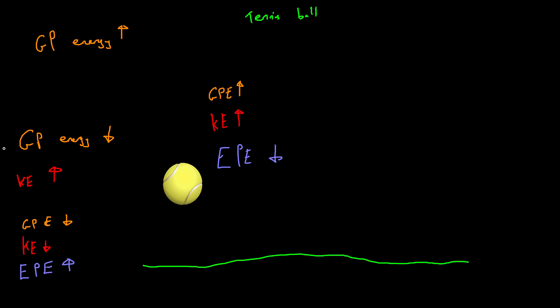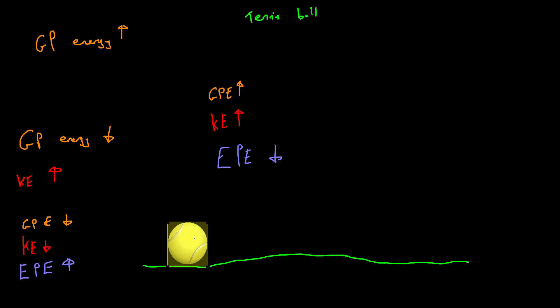The ball won't regain as much energy as it originally had, because some has been lost as sound and as heat. Eventually the ball will run out of energy, stop bouncing, and stay on the floor. So we started with just gravitational potential energy, converted that into kinetic energy, then into elastic potential energy, with some lost as sound and heat along the way. Energy transfer happens all the time — anything that's moving or doing anything can be described in terms of energy transfers.